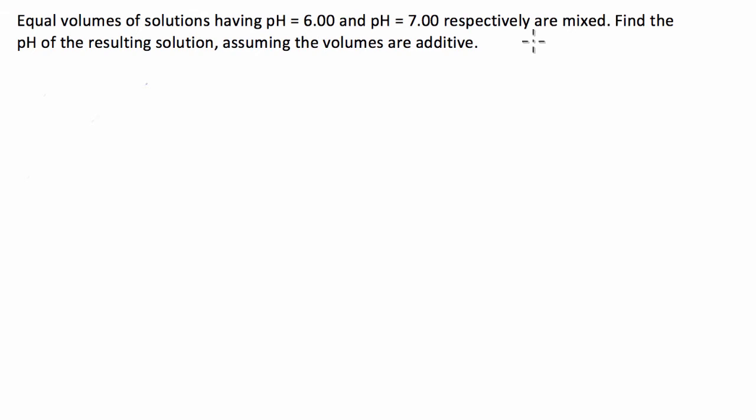So we aren't given volumes of each of the solutions, we're just told that they're the same. So what I usually do is I try and make the volume as simple as possible. So we know that the volumes are the same, so we're going to say volume 1 equals volume 2 and they equal 1 liter. And just so we've got all the information under control, we know that the pH of number 1 is equal to 6 and we know the pH of number 2 is equal to 7.